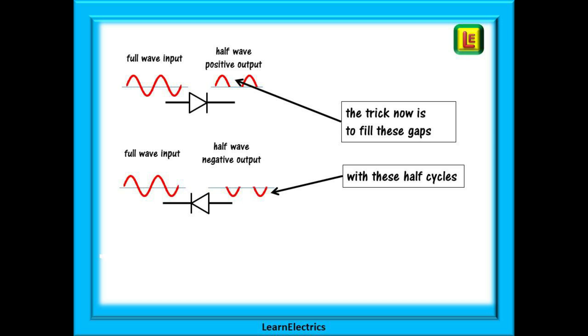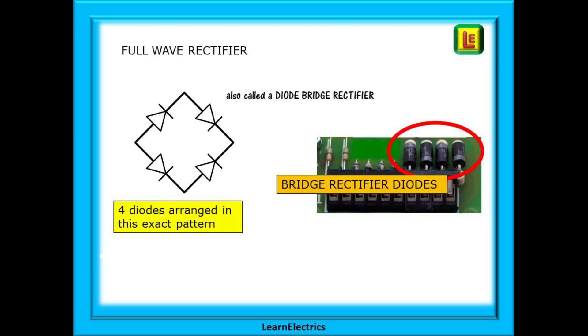What we want to do, the trick, is to arrange the diodes so that the half cycle gaps on the positive side are filled in with the other half cycles. This is the job of the full wave rectifier or diode bridge rectifier as it can be called.